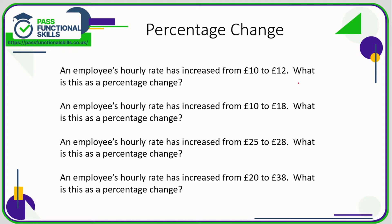Now, percentage change. There's a simple formula: the difference divided by the original amount, multiplied by 100. Although sometimes you don't even need to think about the formula if the questions are really easy. If an employee's hourly rate has increased from 10 pounds to 12 pounds, that is an increase of 2 from 10. All we need to do is turn this fraction into a percentage — a percentage is an equivalent fraction out of 100.